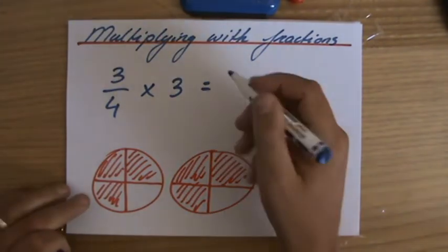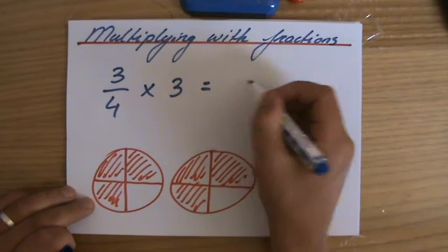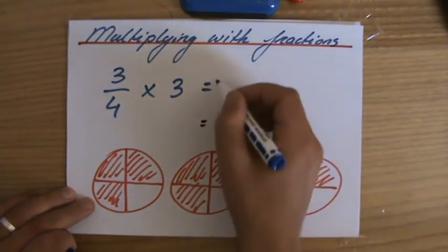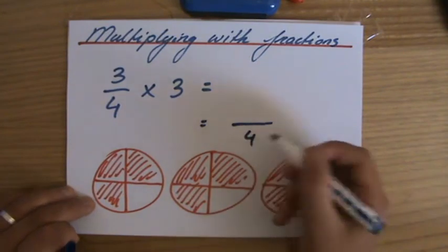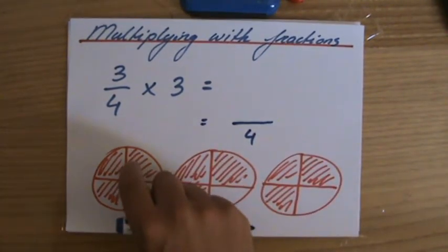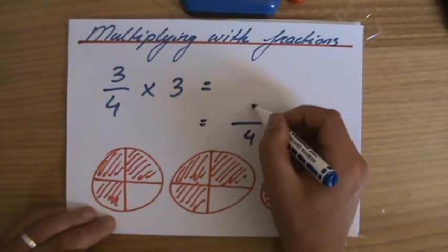Now the question is then, how many quarters do I have? I'm going to put my answer here because I want to write something there in a minute. How many quarters do I have? 1, 2, 3, 4, 5, 6, 7, 8, 9 quarters.